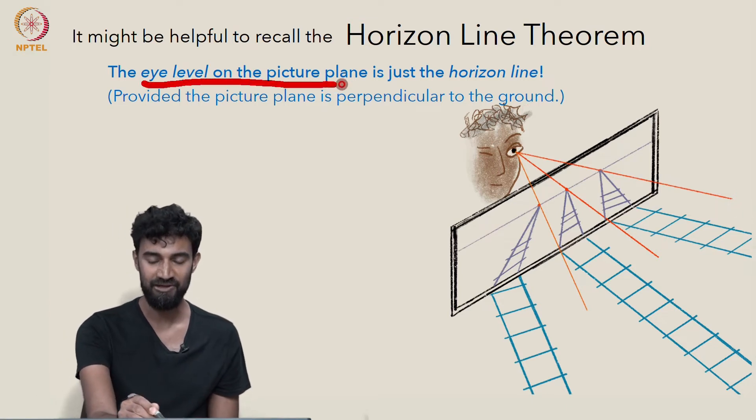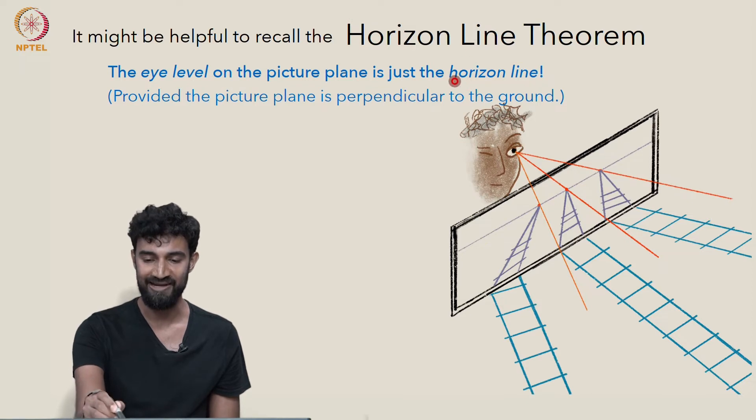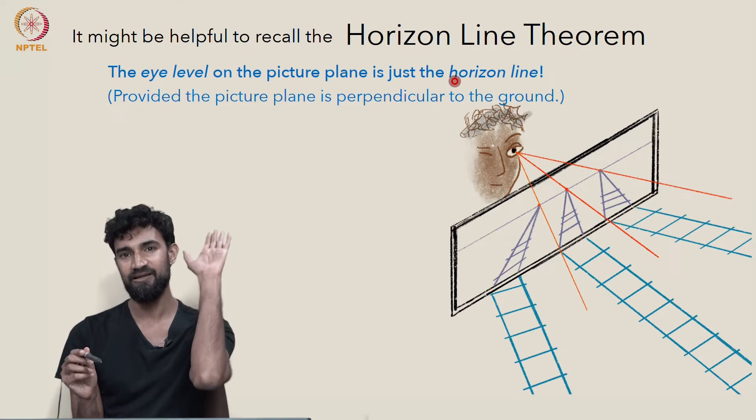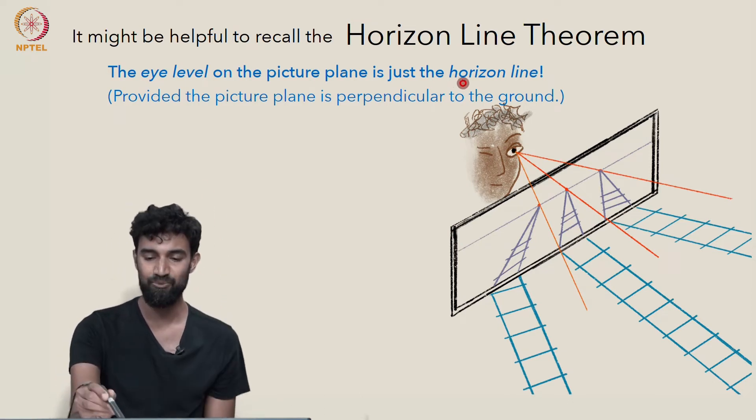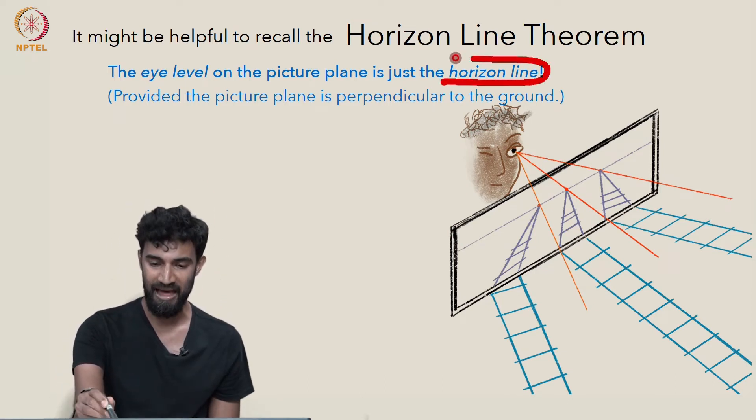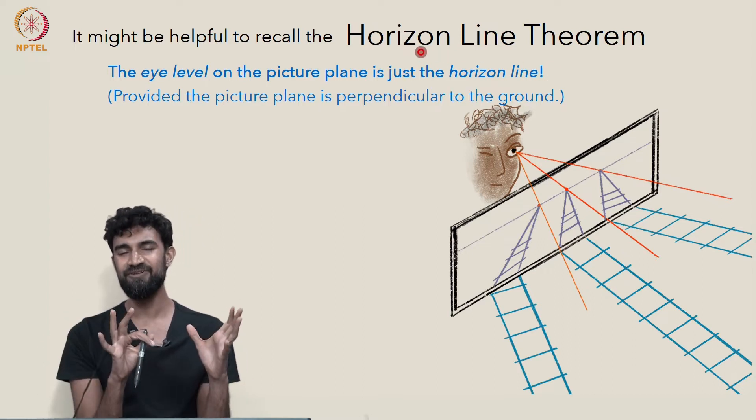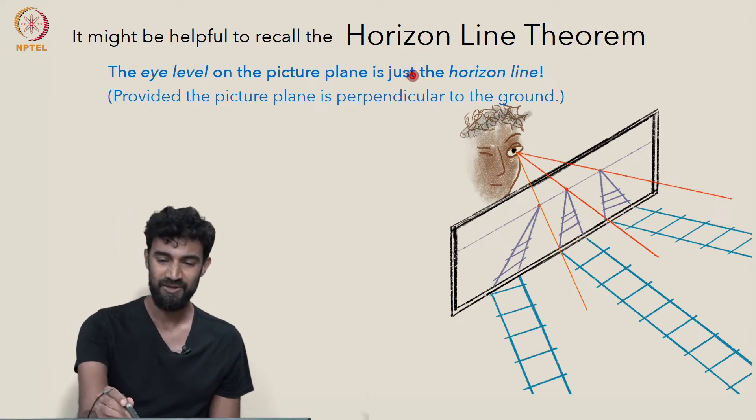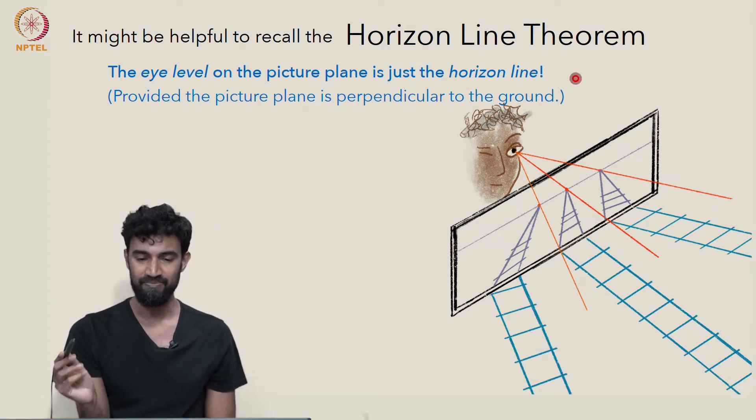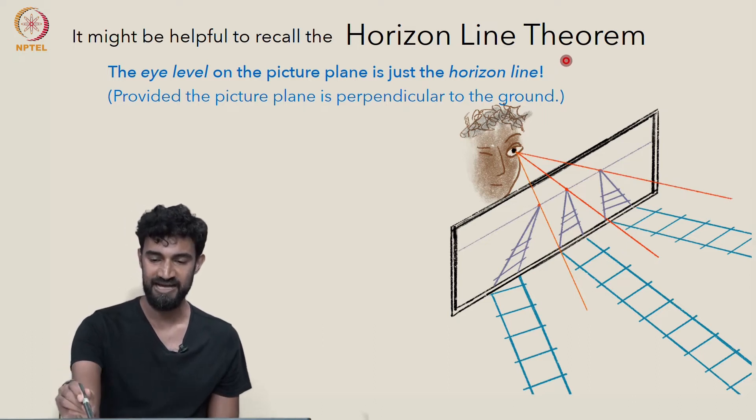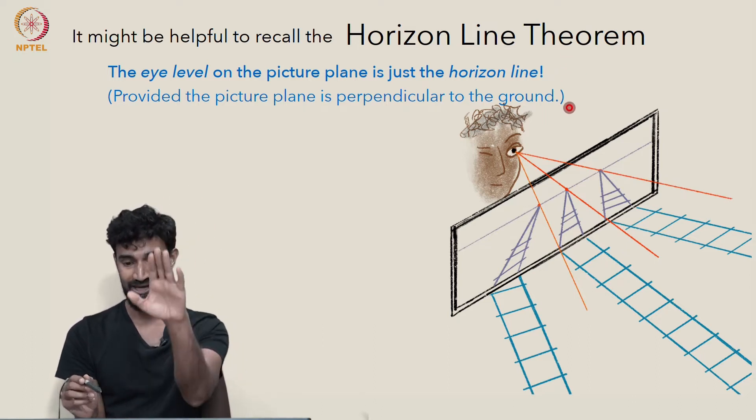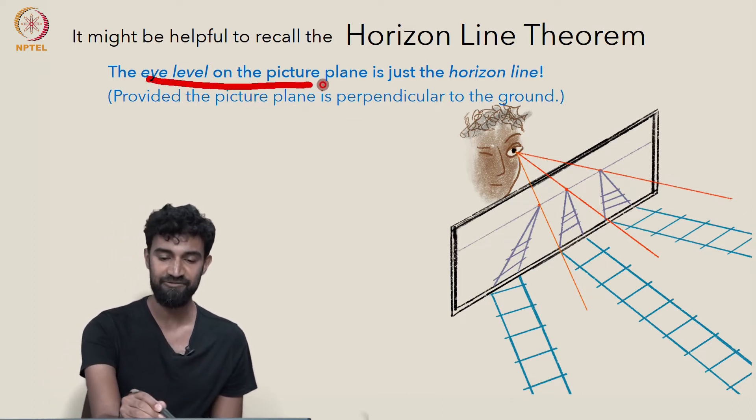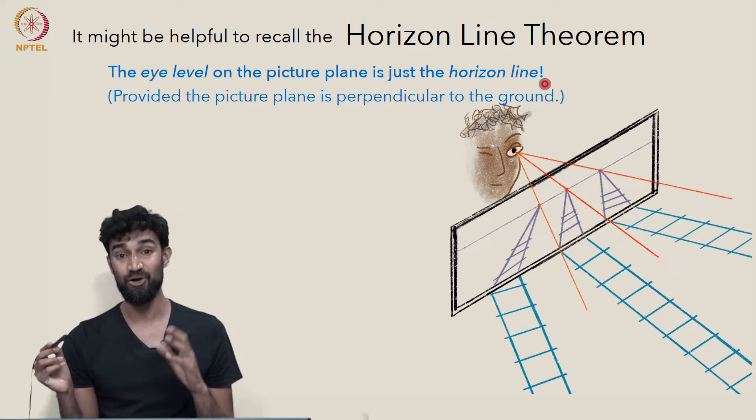Technically the eye level of the picture plane is still the horizon line, but if your picture plane is angled in a funny way, you'll end up with a mathematical horizon line which is different from your physical horizon line where you see the sun setting. So that's something to think about—that's a side problem to think about, what happens if you angle your picture plane up or down. But provided the picture plane is perpendicular to the ground, there's no confusion, and the eye level of the picture plane is just the horizon line.